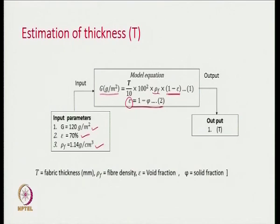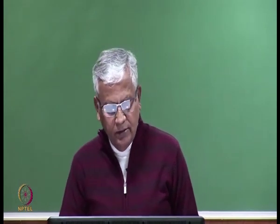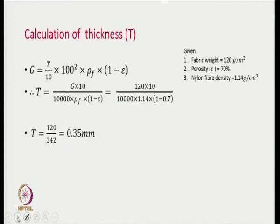If it is polyester we change the density to 1.38; whatever fiber is given, density will be set accordingly. From there, since G is as stated in the previous equation, we can find out what should be my T — very simple. We make use of that equation to find out the value of T, which gives 0.35 mm. That means we have to make a very thin fabric of only 0.35 mm in this particular case.